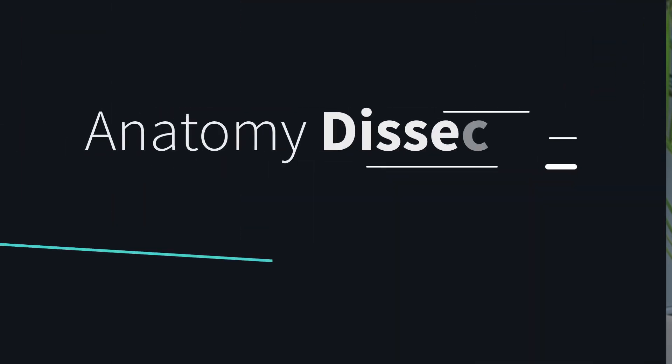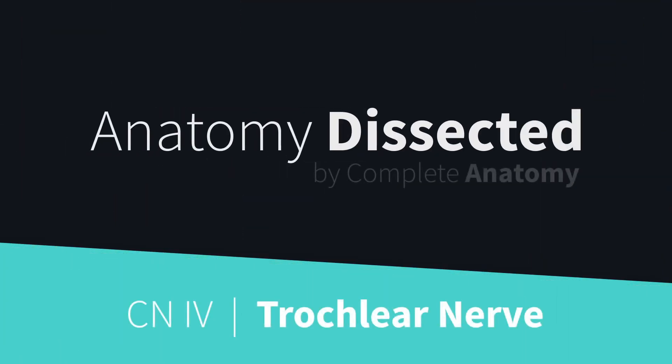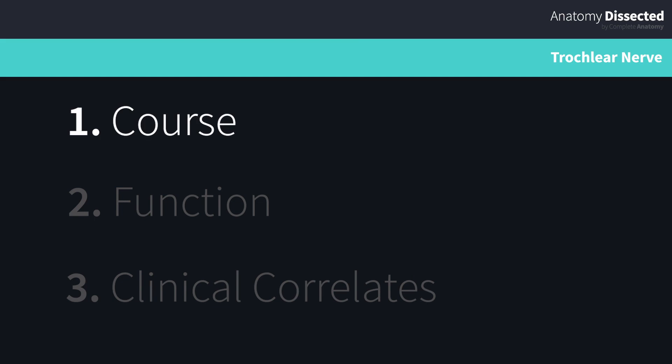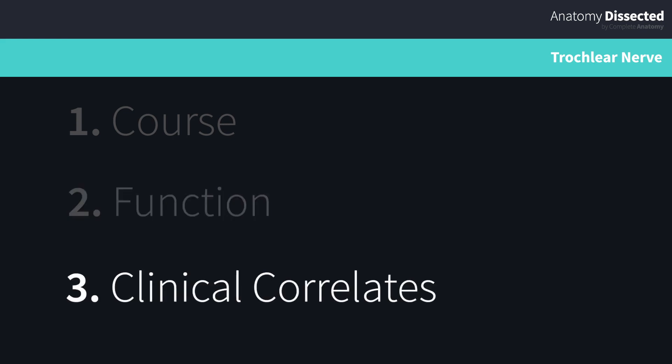Welcome back to our brand new series, Anatomy Dissected by Complete Anatomy. Continuing on with our cranial nerve series, it's now time to take a look at the fourth cranial nerve, the trochlear nerve. In this video, we'll first describe the course of this nerve, explore briefly the function of the muscle it innervates, and then round off by looking at a few clinical conditions associated with this nerve.